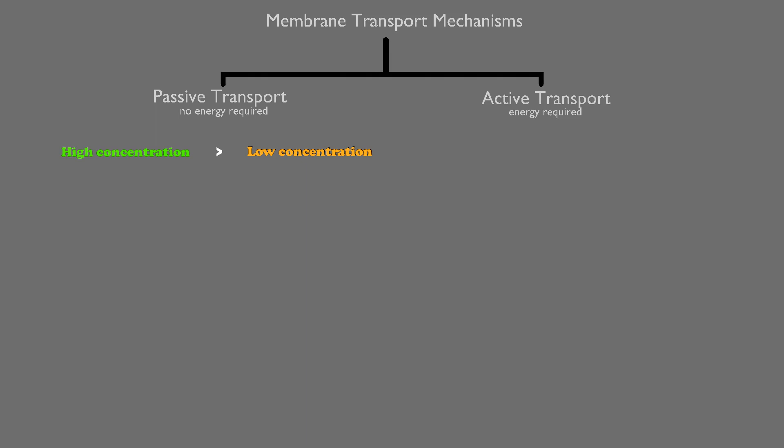However, in active transport, molecules are going to use energy to move from low concentration to high concentration, against the concentration gradient. And the way that they're going to do this is by using energy in the form of ATP.